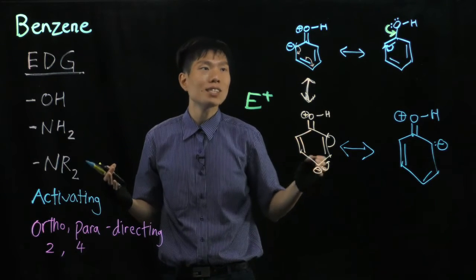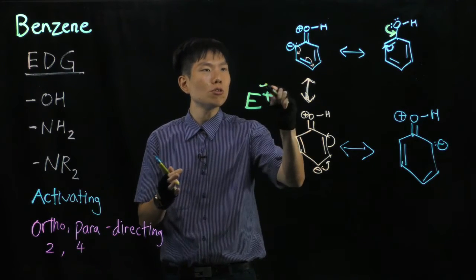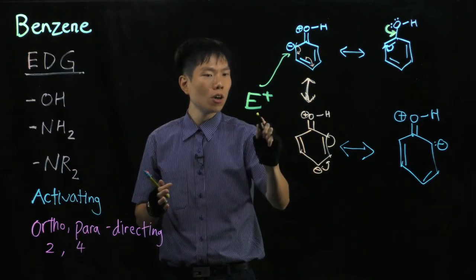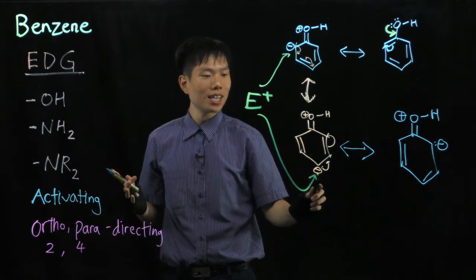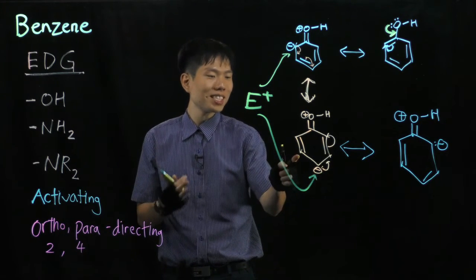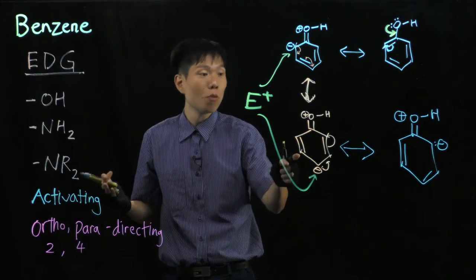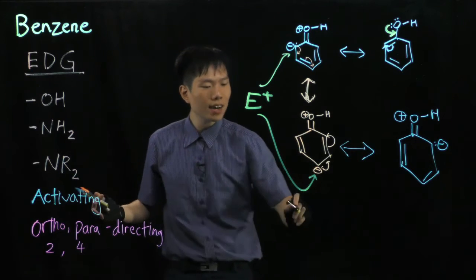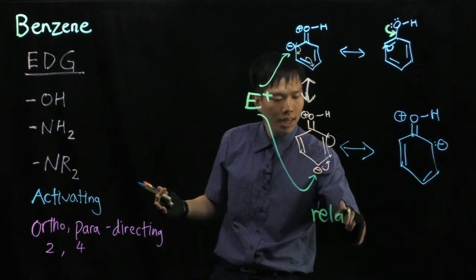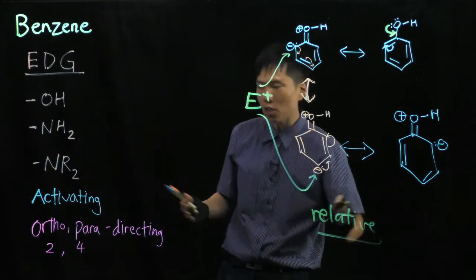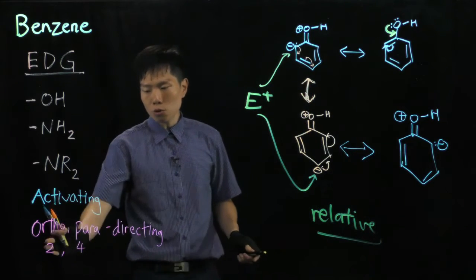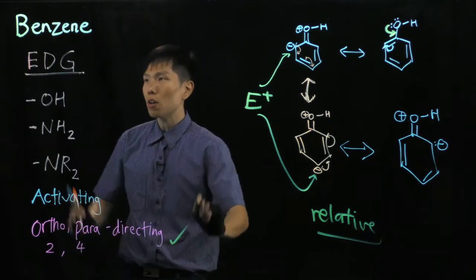It would love to go to the place, the region, the site with most electron density. And it would prefer to go to either the ortho or the para. It would not go to the meta because it doesn't have much more electron density compared to the rest. So again, all these are relative. And by now, I hope you know how to explain why this is ortho-para directing for the phenol group.